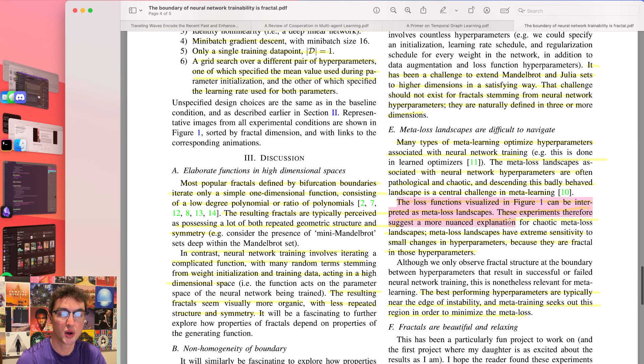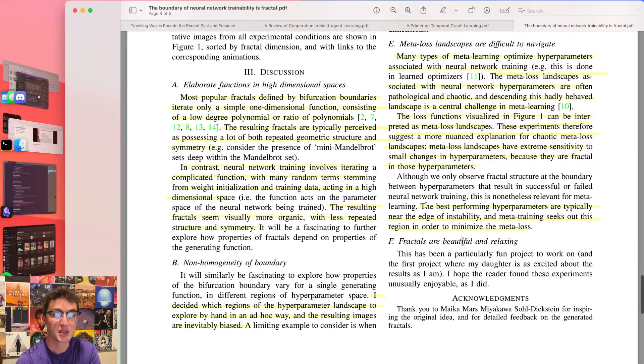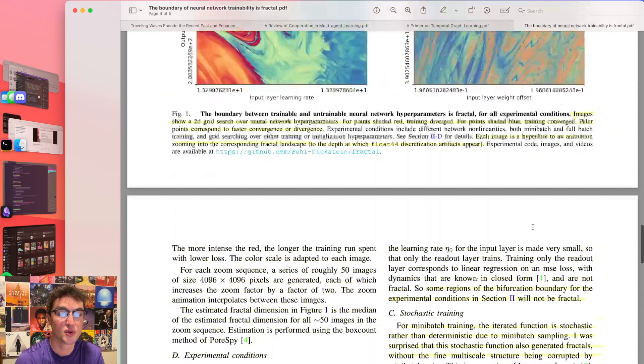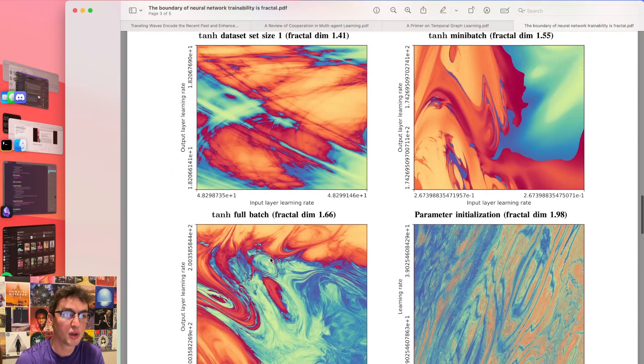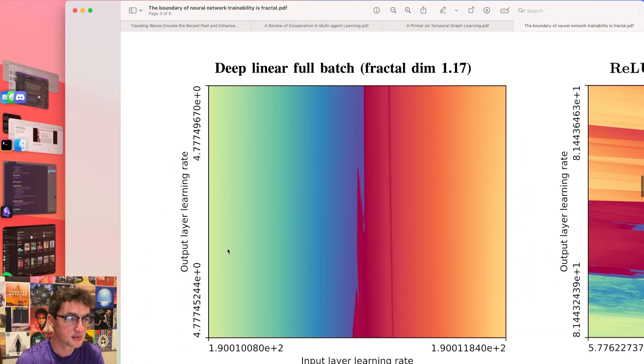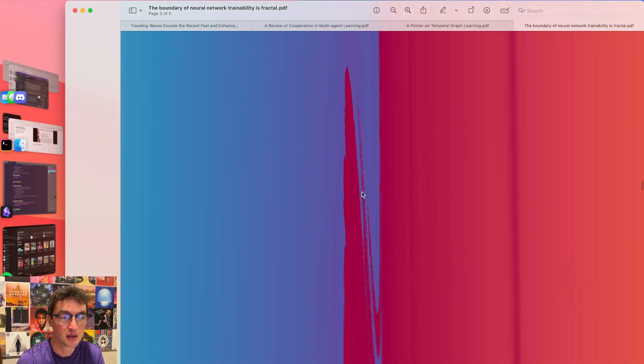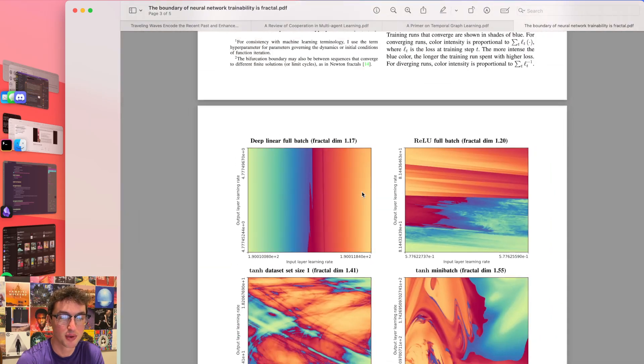These experiments, therefore, suggest a more nuanced explanation for chaotic meta-loss landscapes. Meta-loss landscapes have extreme sensitivity to small changes in hyperparameters because they are fractal in the hyperparameters. So the whole meta-learning subfield, no wonder it's so difficult, basically. The best-performing hyperparameters are typically near the edge of instability, and meta-training seeks out this region in order to minimize the meta-loss. So the actual best models will not be over at this on the left side or on the right side. The best models will actually be deep into these crevices, which is pretty interesting, and also makes it more risky.